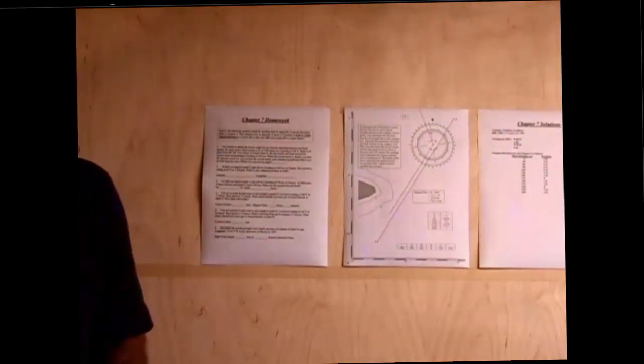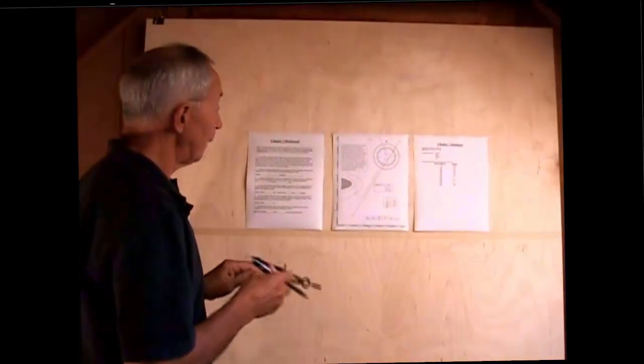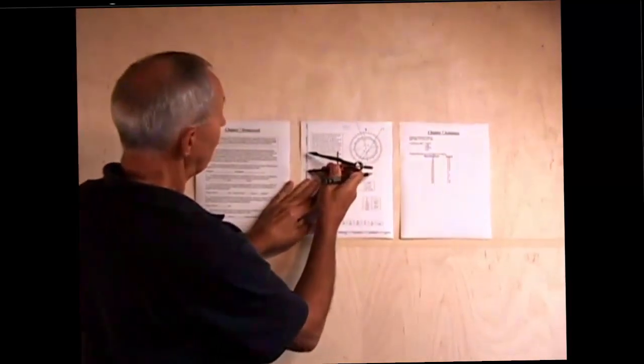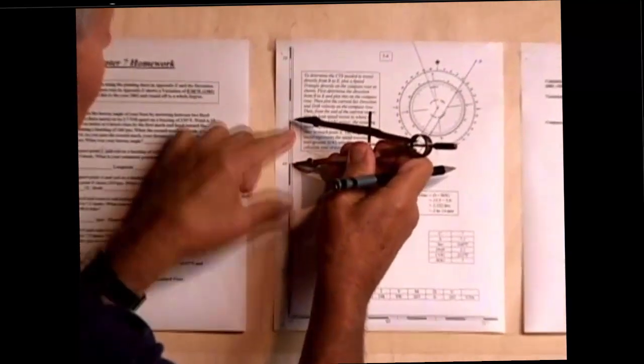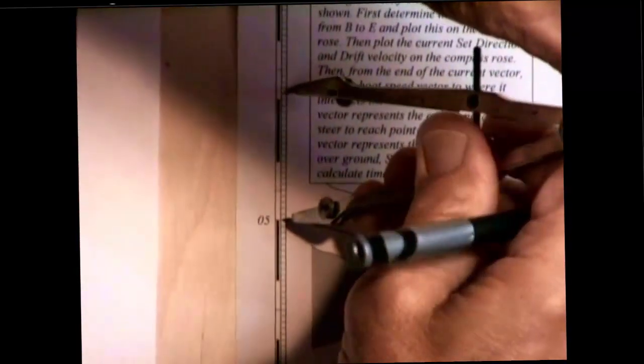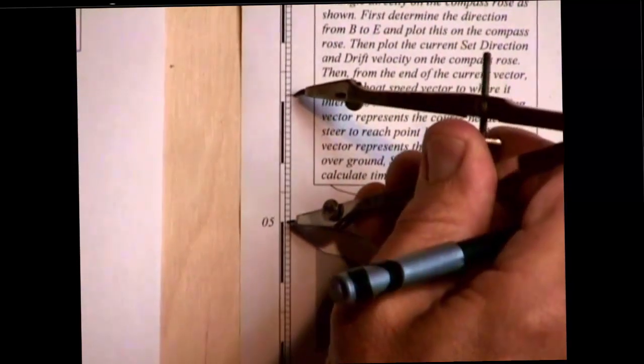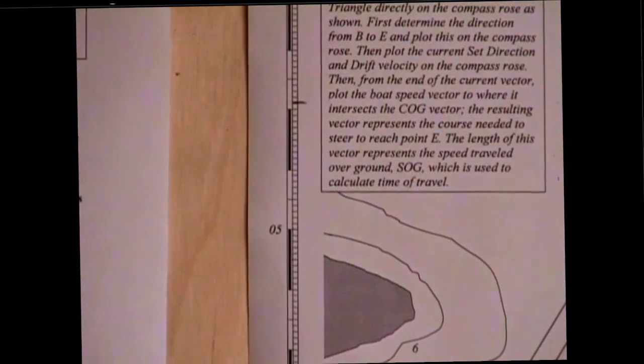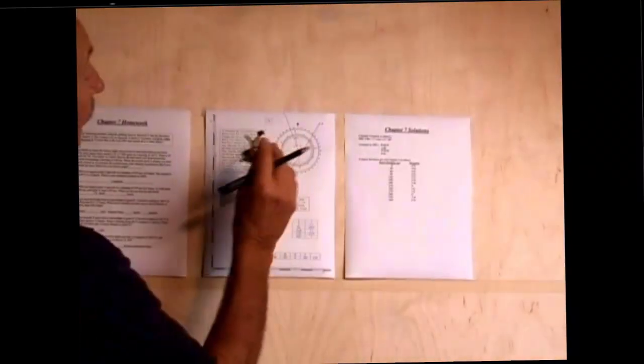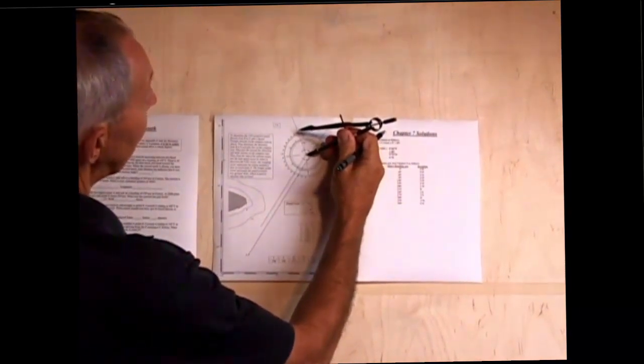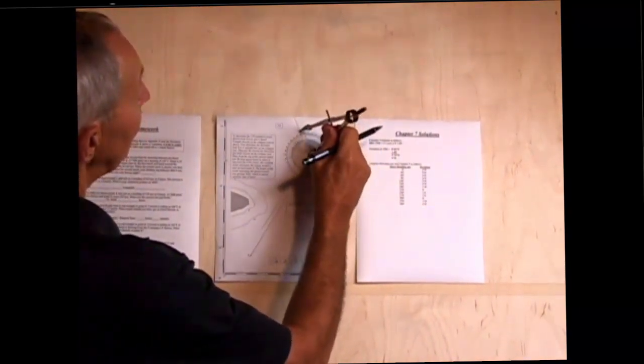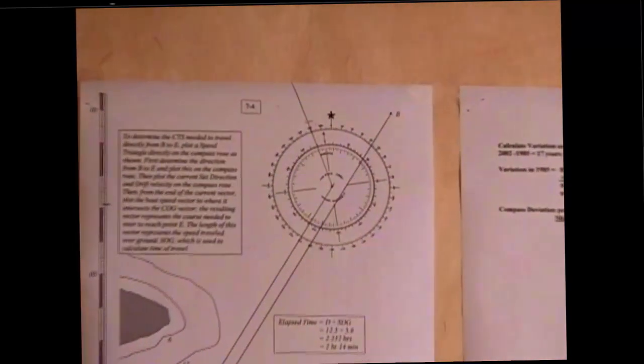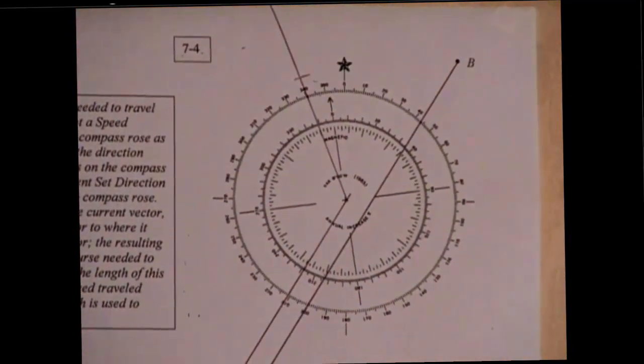And the current is setting at a speed of 2.1 knots. So what I'd like to do is set my dividers at 2.1 miles to represent the 2.1 knots. So I come here. Here's 1, 2, 2.1. And I've set this at 2.1 miles to represent 2.1 knots. I'm going to take that, put the point at the center of the compass rose, and come up here and strike a mark, an arc there. And that length represents 2.1 knots of current speed.